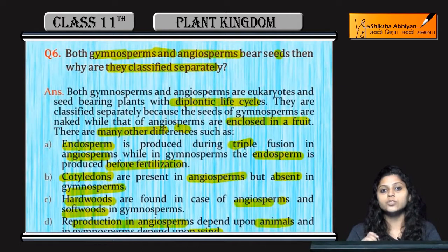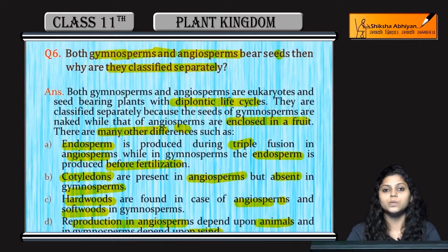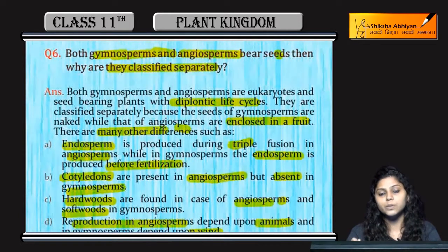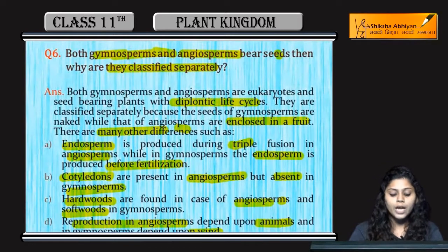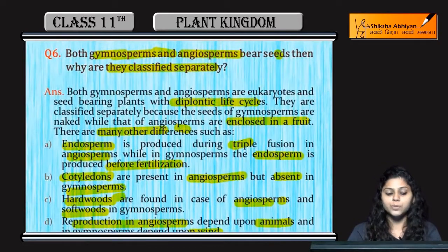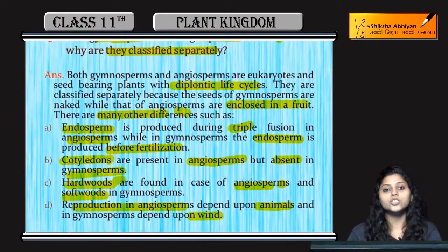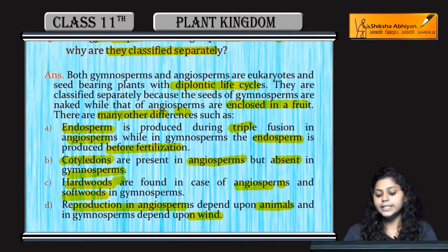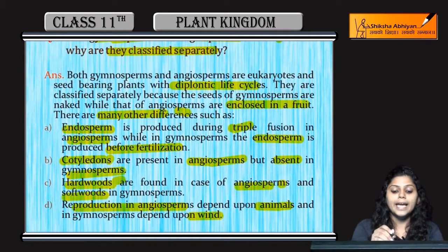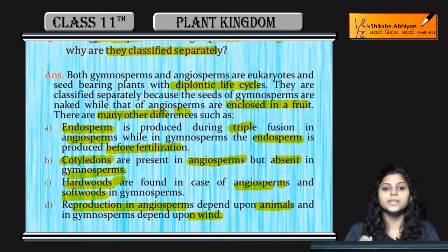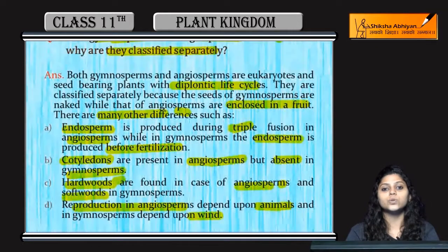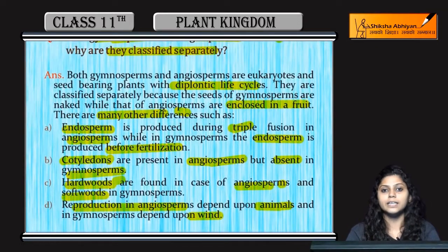Recap: seed जो है वो enclosed होता है angiosperm में with fruit body, whereas gymnosperms में naked होता है। Cotyledons present होते हैं angiosperms में। Hardwood होती है angiosperms में, softwood होती है gymnosperms में। Reproduction in angiosperms is carried out by animals, whereas in gymnosperms it is carried by wind। इन differences की वज़ह से इन दोनों को अलग-अलग category में रखा गया है।